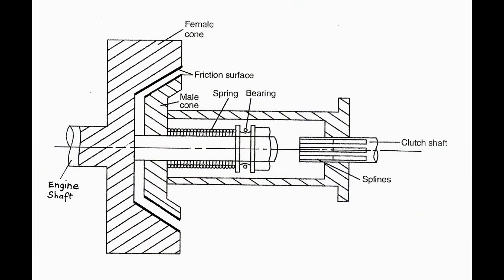This is how the cone clutch works, explained through a simple diagram. An actual clutch may have quite complicated construction depending on other requirements, but the diagram uses a simplified form for easy understanding. In the next episode we will be taking up the single plate clutch. Thank you.